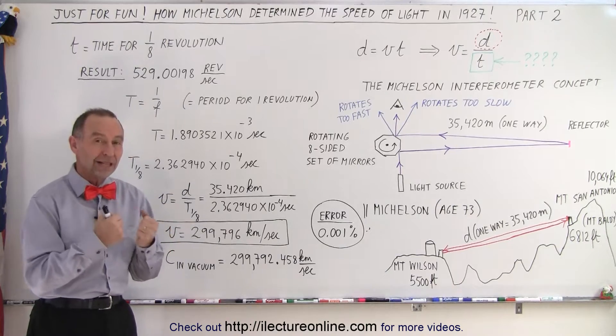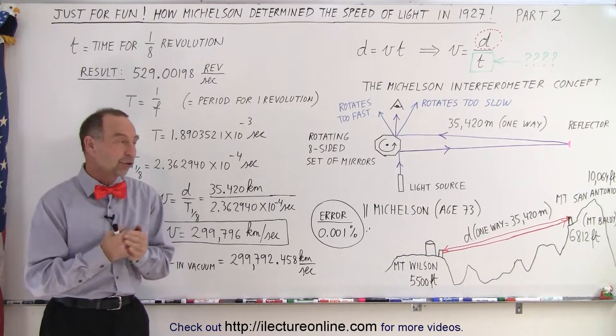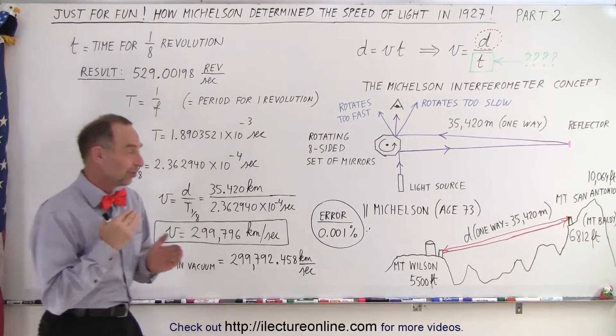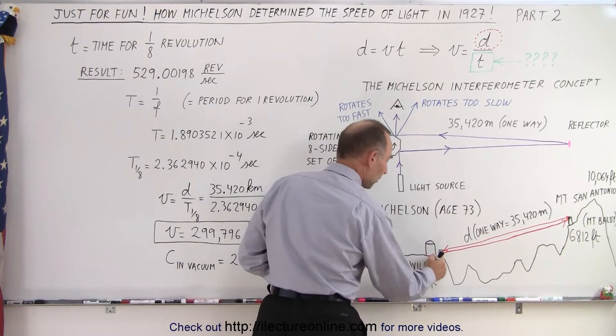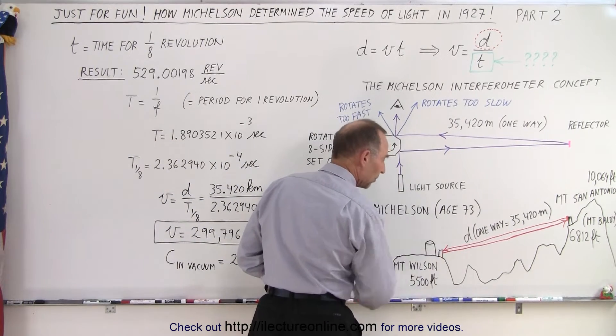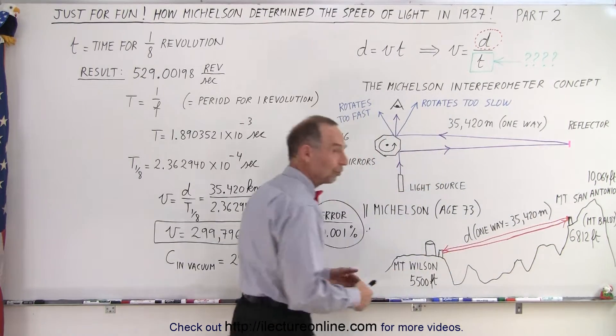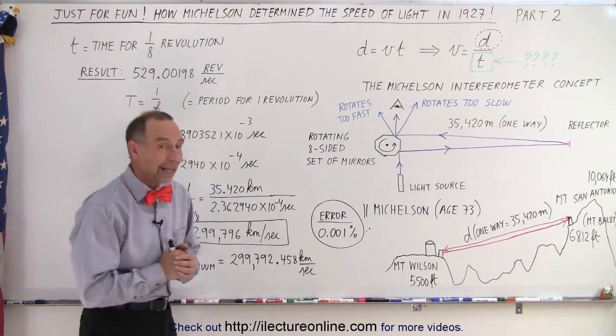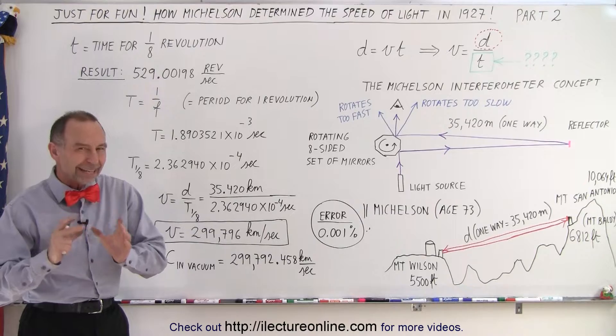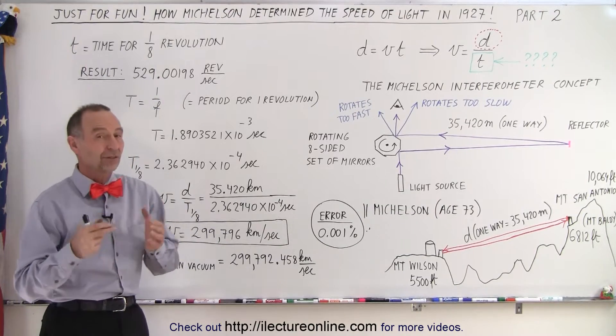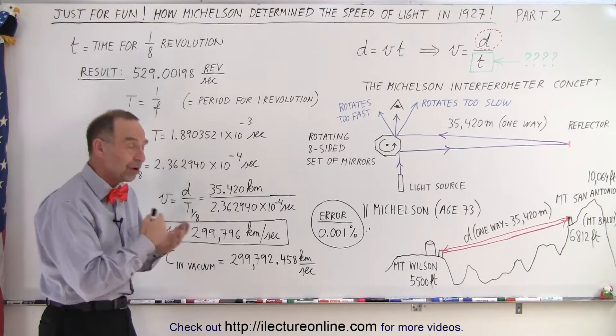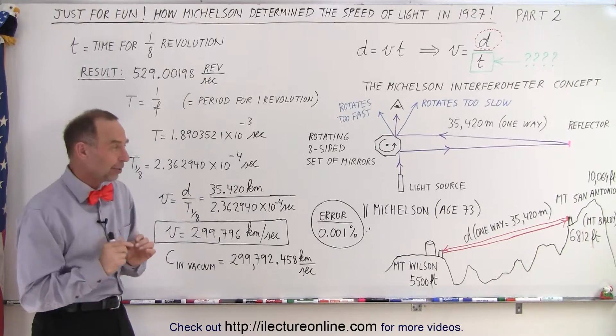This elaborate method, with enormous amount of effort to try and determine the distance precisely between the source of the light on top of Mount Wilson to the reflector, and multiply times two to get back. They were within about 10 centimeters of the actual distance, at least so they thought when they actually measured that. So they were very, very accurate.